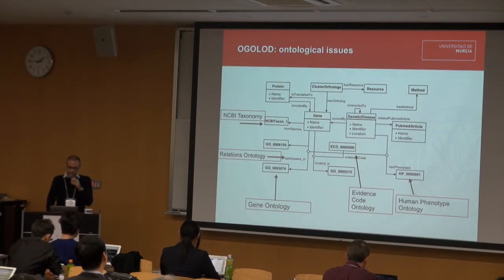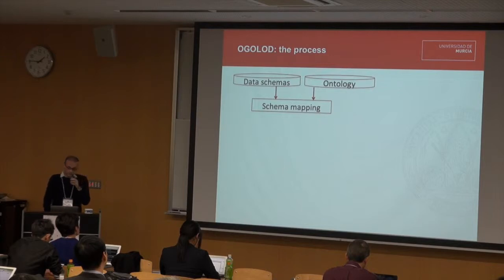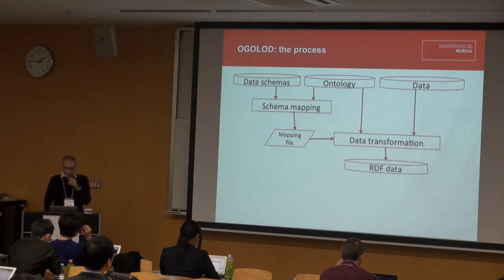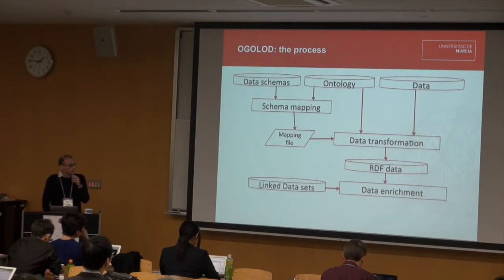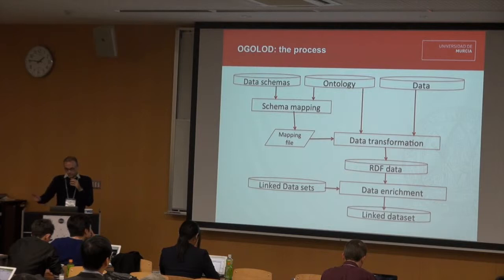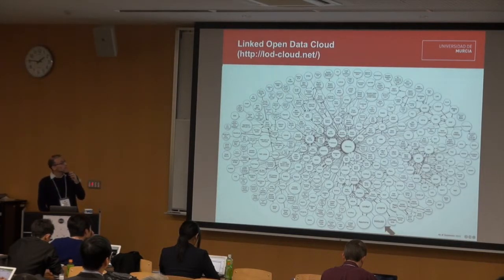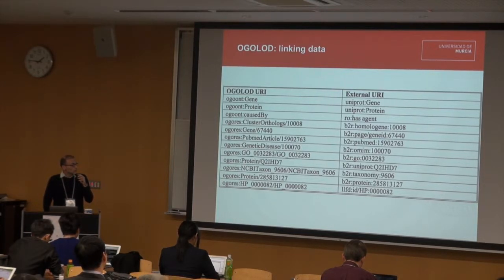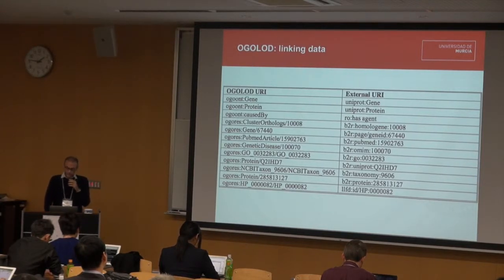The process to build this linked dataset was quite the standard one. We defined a mapping between the data schemas and the ontology, which produces a mapping file. We applied this file over the different datasets in order to get the RDF datasets. Then we searched for external datasets and resources which would be linked to ours — a process of data interlinking. We generated the linked dataset, and the result was to have a node in the Linked Open Data cloud. The external datasets linked to our data include UniProt, Bio2RDF, which was one of the major linked data sources, and also the LinkedLife Data project.